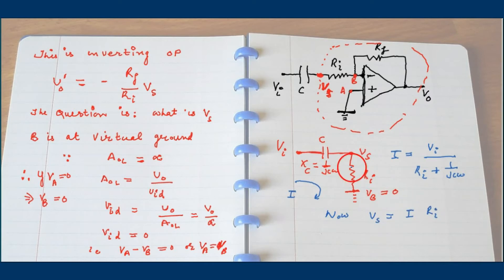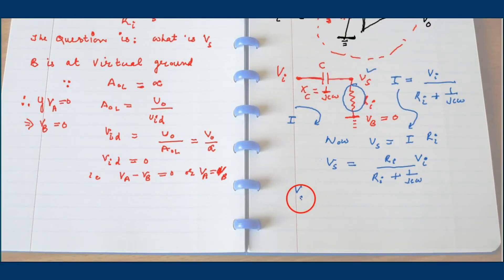I equals the voltage over the total reactance, which is RI plus 1 over jC omega. How much voltage is built up across RI? That is i into RI. Substituting the value of i here, the signal Vs becomes this much. This is a relation between Vs and VI.